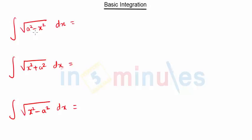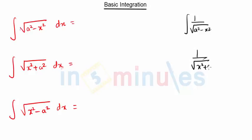Hello everyone, welcome to 'In Five Minutes.' In this video we are going to continue with our basic integration formulas. Now we have the root of a square minus x square with the root sign in the numerator. In our previous video we saw the integration of root of a square minus x square, the integration of root of x square plus a square, and also the integration of root of x square minus a square. Now the root sign is in the numerator with the same terms.